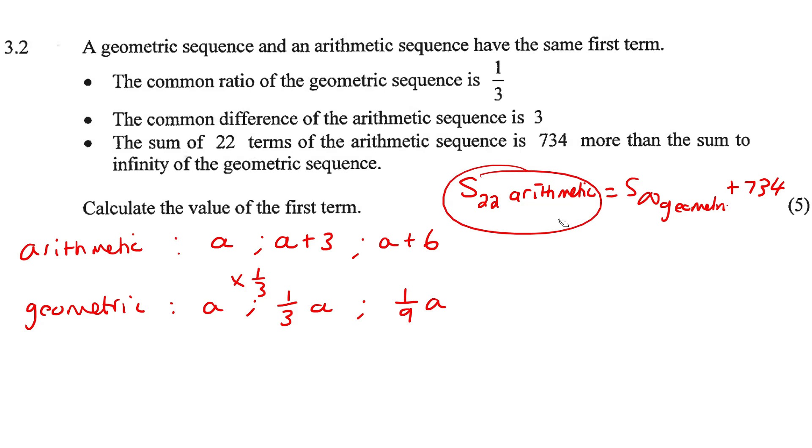So they're saying that the arithmetic is equal to the geometric plus 734. Some learners do struggle with this. They want to put the plus 734 on this side, but the arithmetic is 734 plus the geometric. So it's more than the geometric.